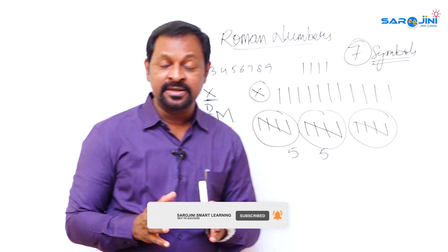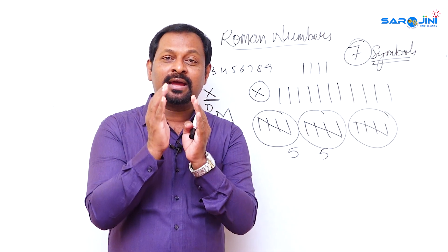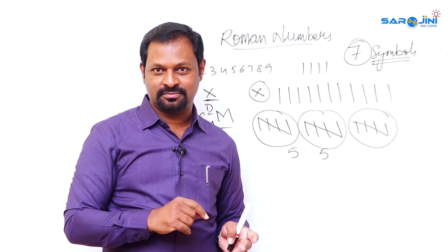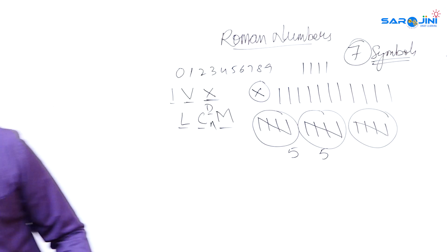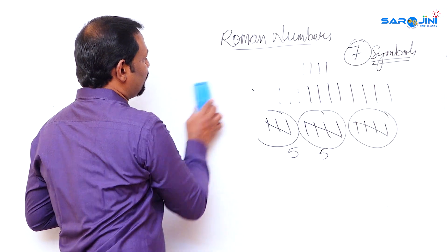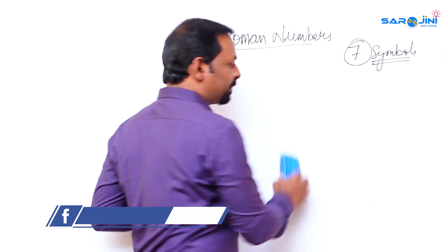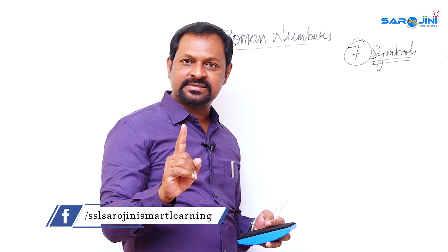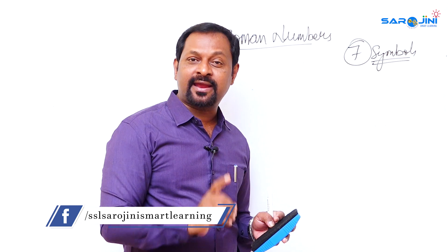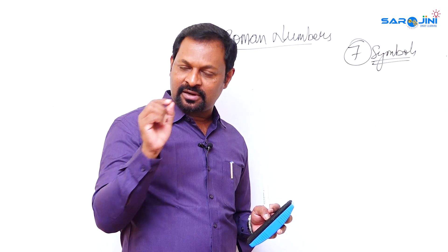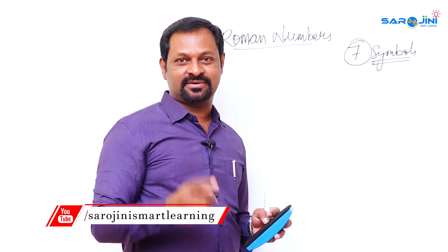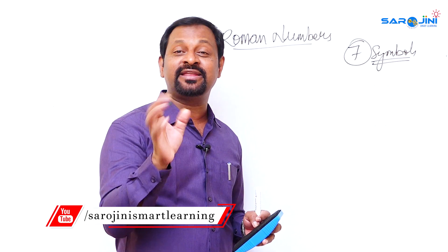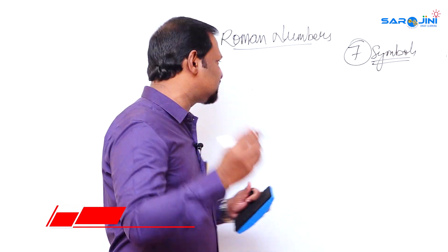Before learning Roman numbers, remember two key points. First, there is no symbol for zero in Roman numbers. Second, no symbol should be written more than three times consecutively. These are the two fundamental rules you must remember.